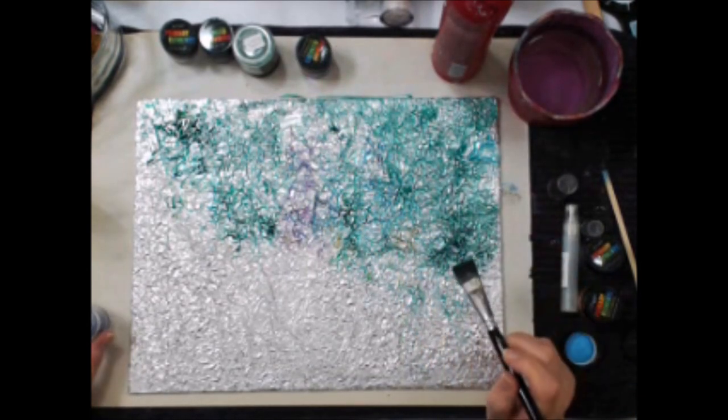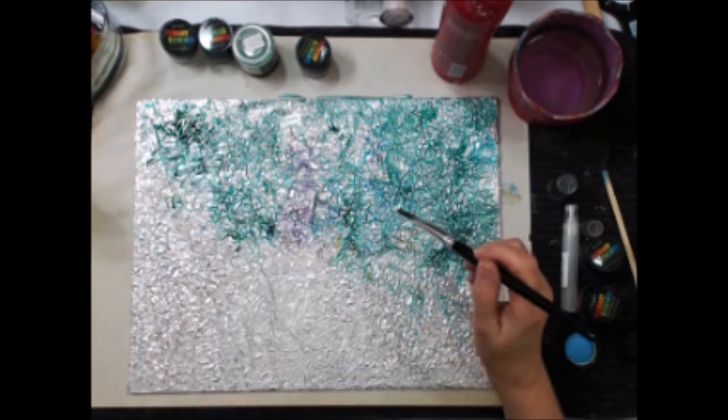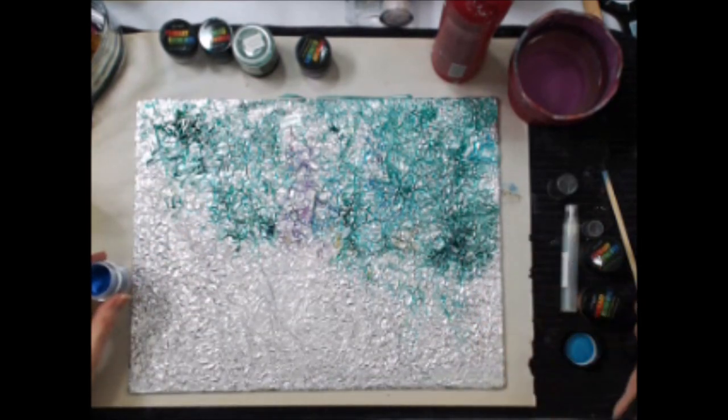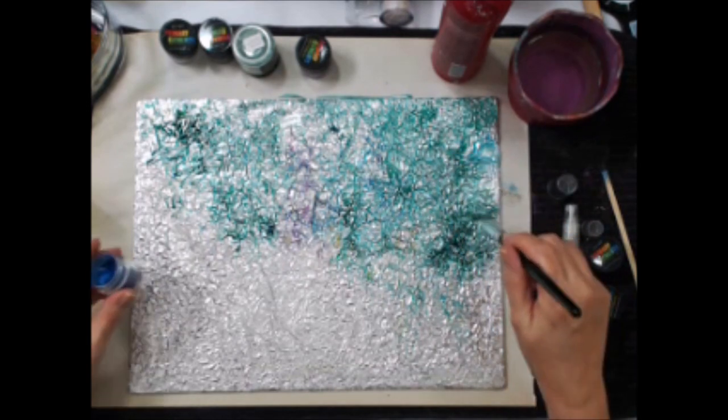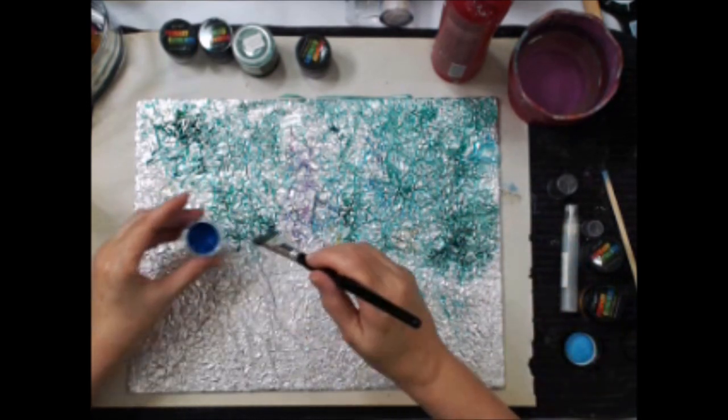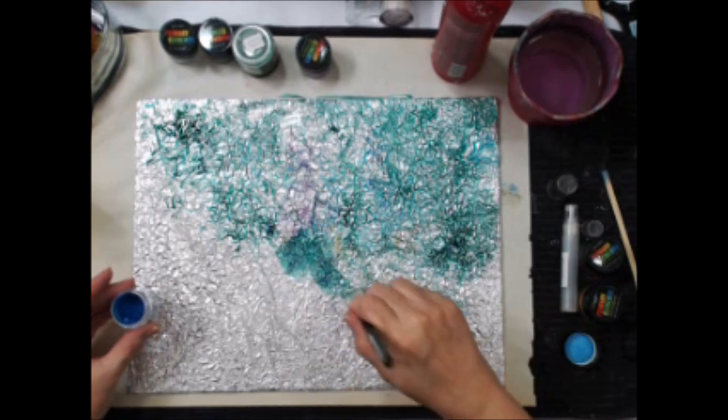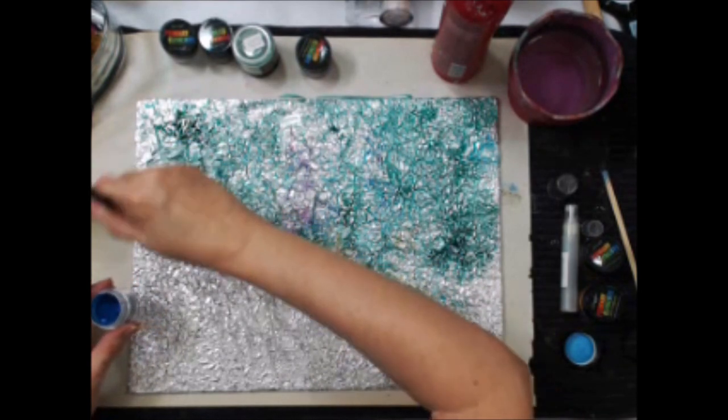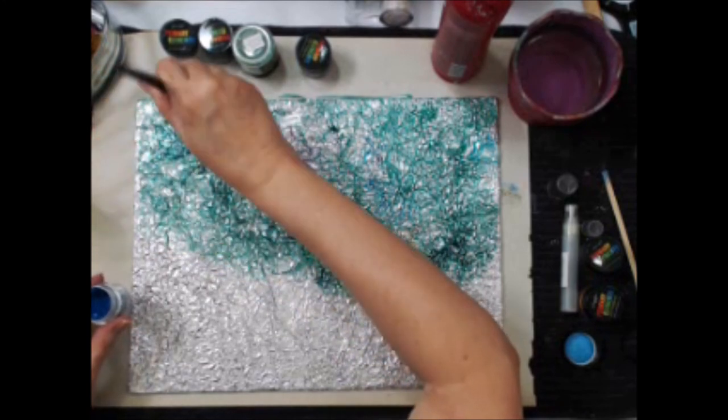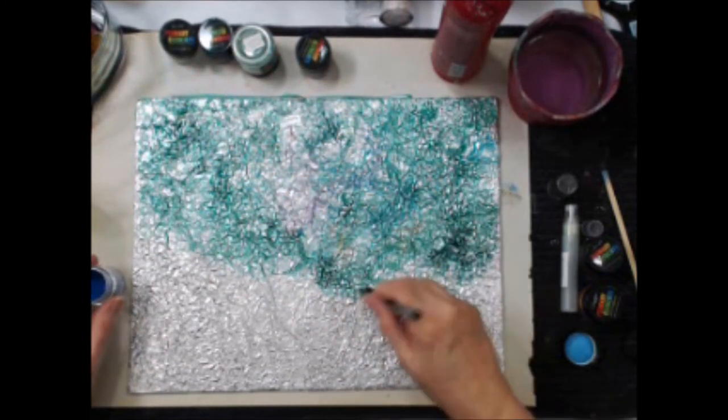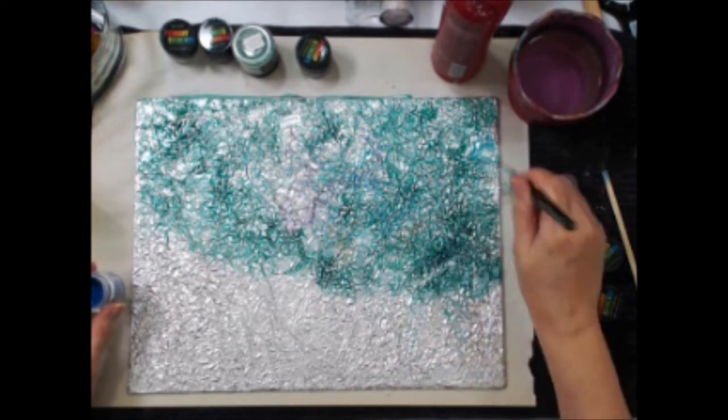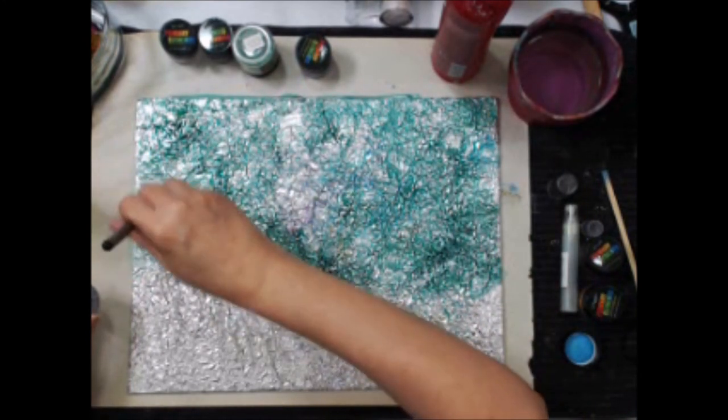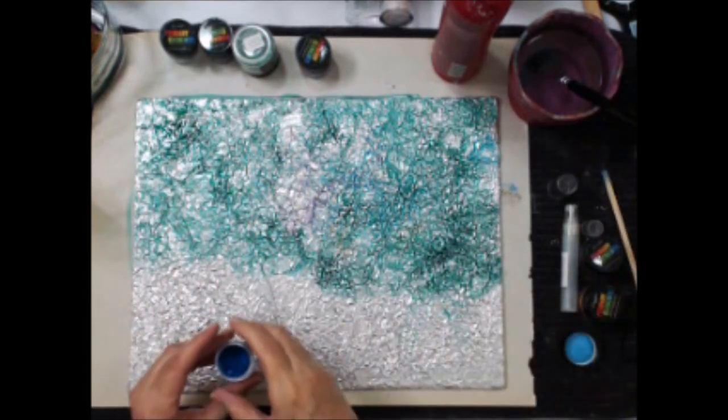I think that is the blue zircon, and I had the golden nugget on there, so I'm getting this pretty teal color. Really, really nice. I like that. Okay. I think I'm overwhelmed with green here. So, I'm going to rinse my brush. Put this cap back on.